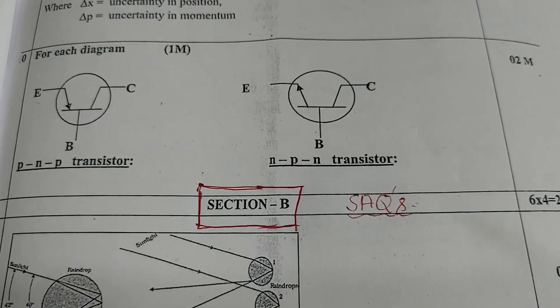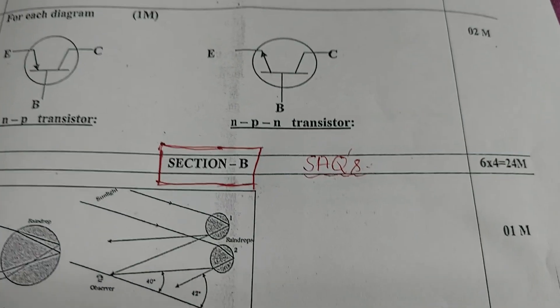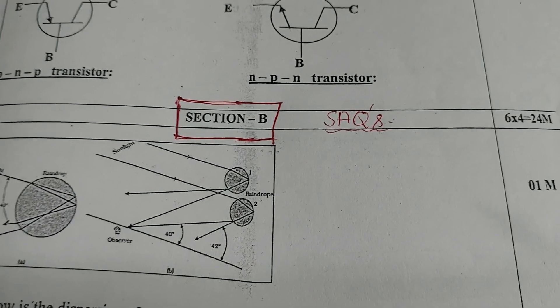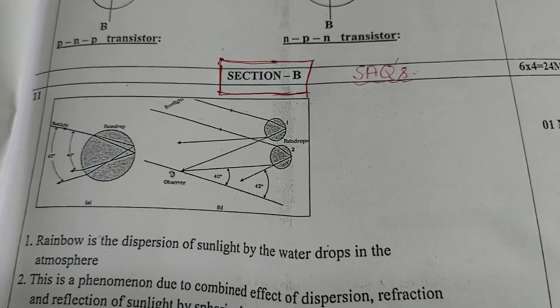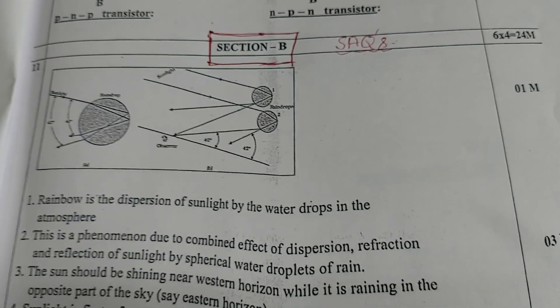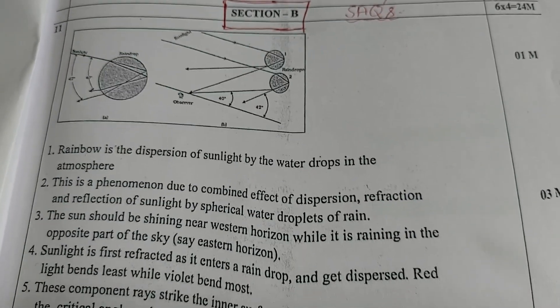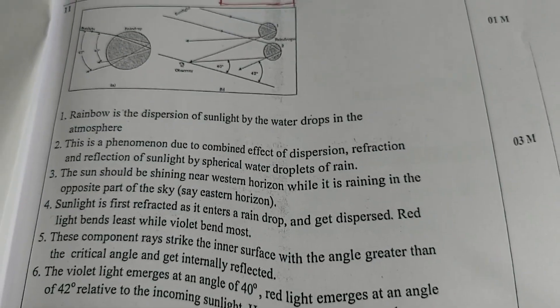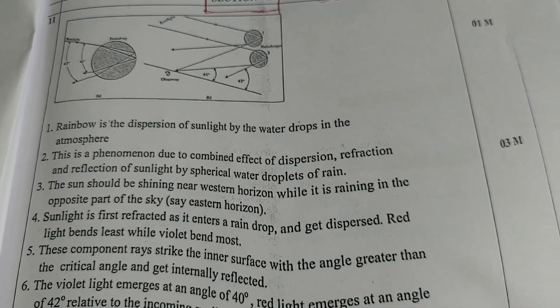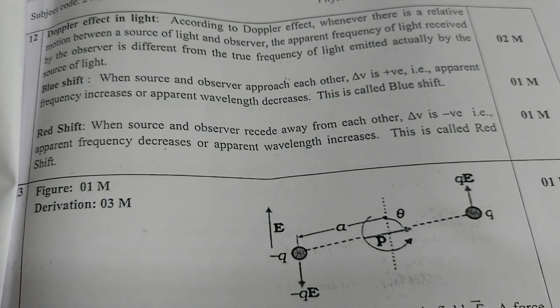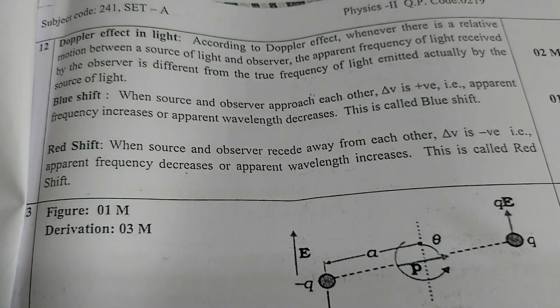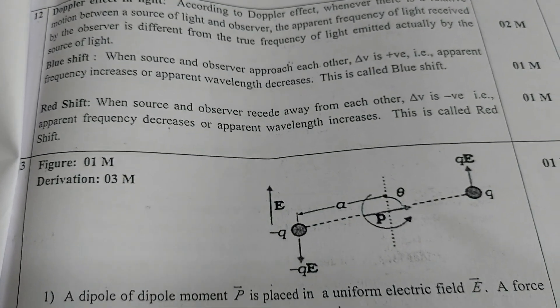Now we move on to Section B, the SAQ part — short answer questions. Each one carries four marks; six questions need to be answered — six times four equals 24 marks. For the rainbow question, the diagram carries one mark and the content three marks. For Doppler effect in light: two marks for the effect, one mark for blue shift, one mark for red shift.